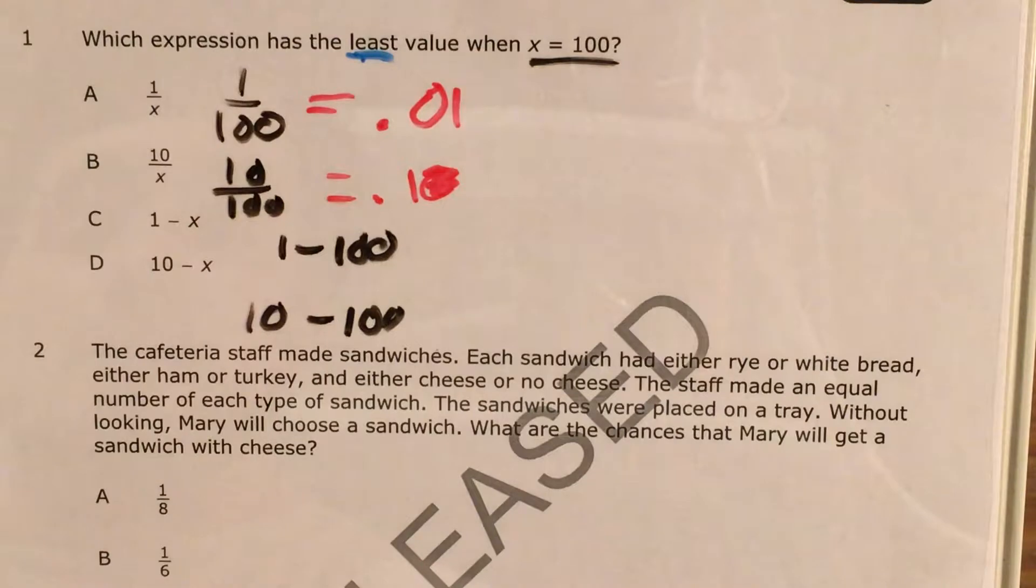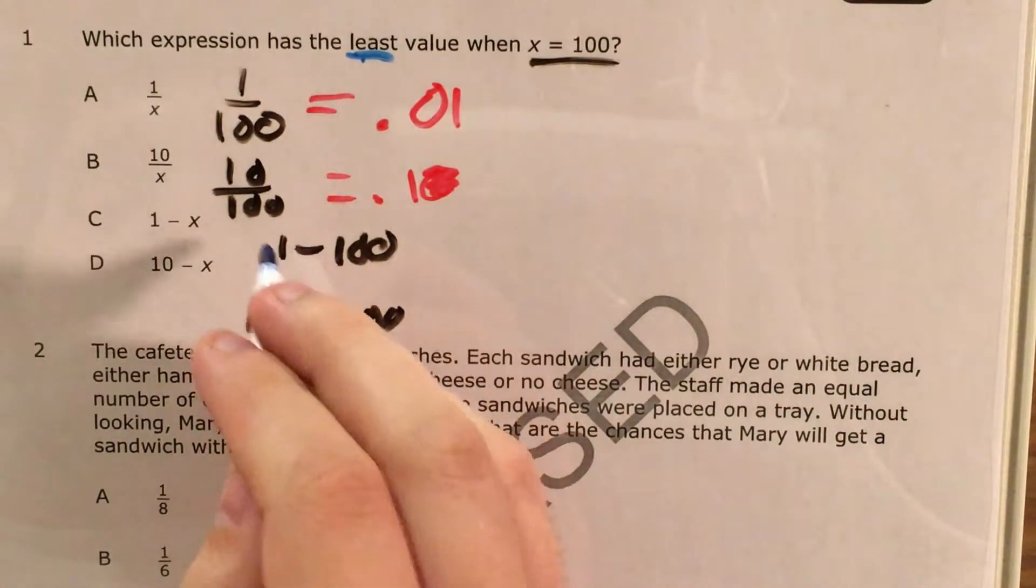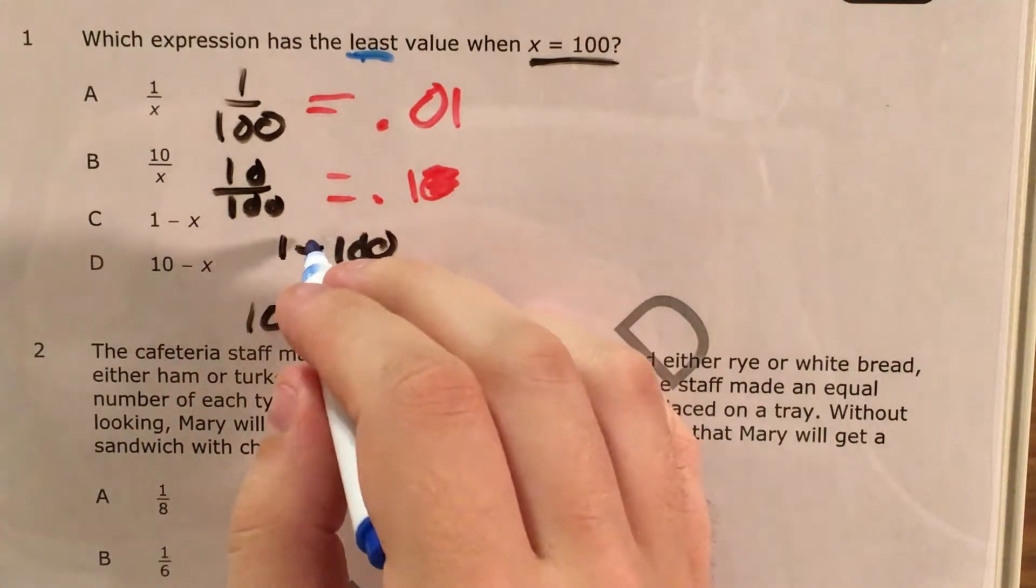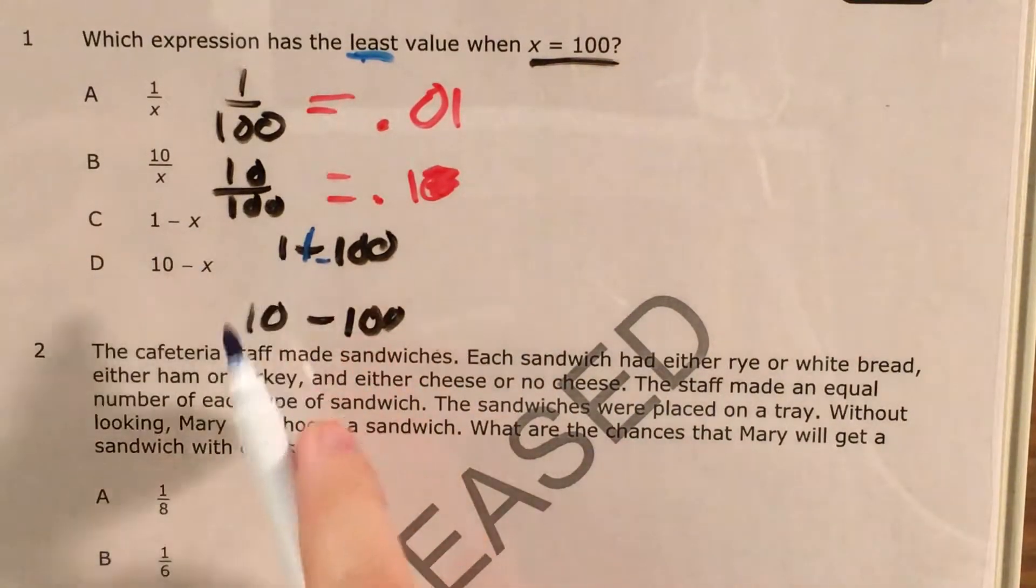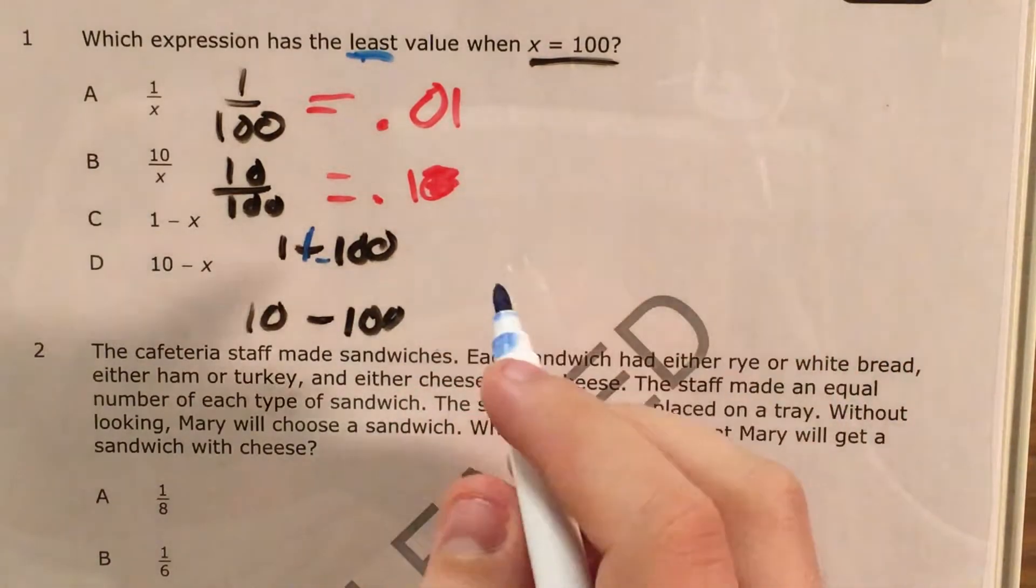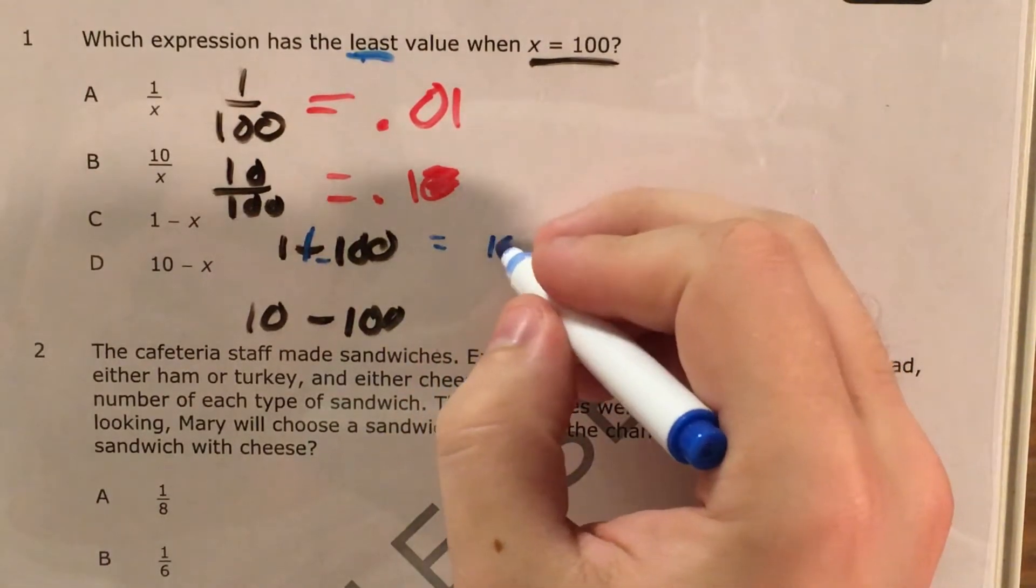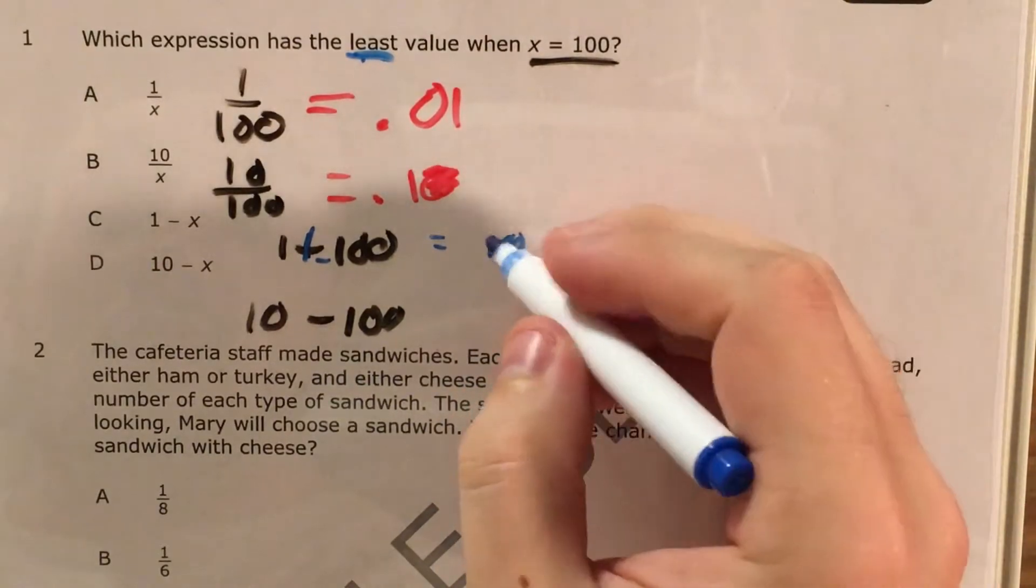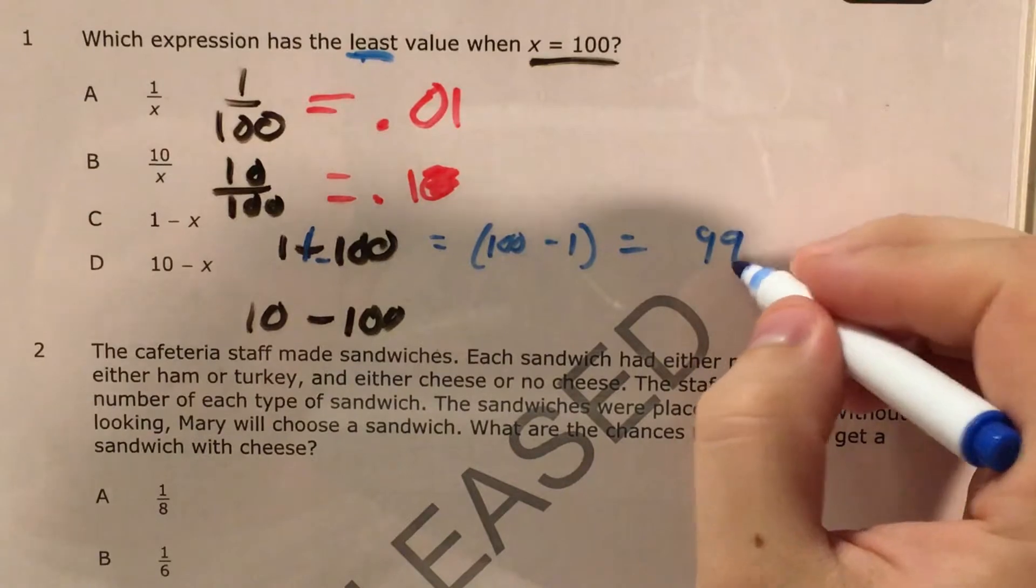Now for 1 minus 100, this is when we get into our rules about subtracting integers. Because I can think of this, in addition to just 1 minus 100, I can think of it as 1 plus negative 100. And now that I'm adding a positive number and a negative number, my rules change a little bit because I have to figure out what 100 minus 1 is, and that's 99.